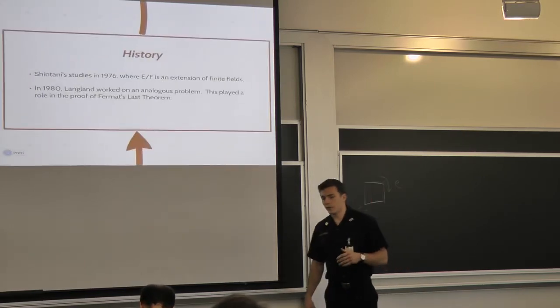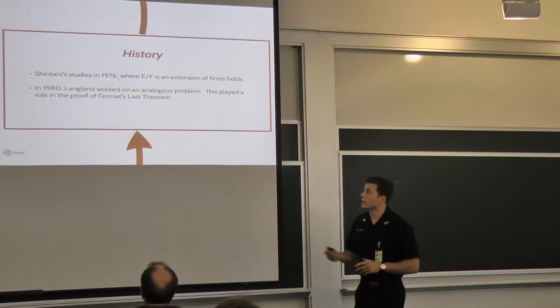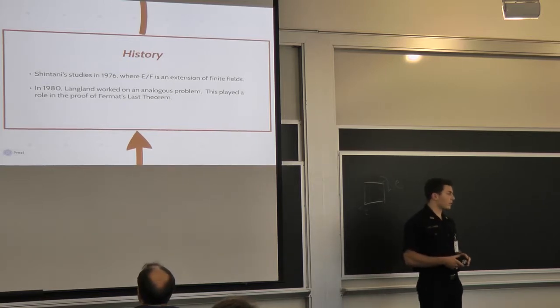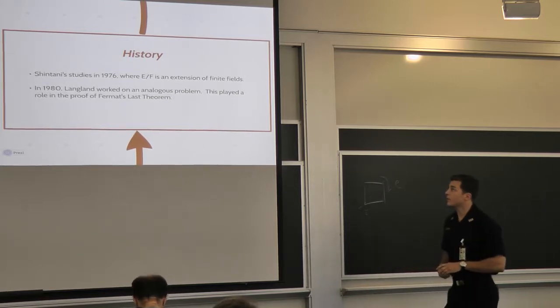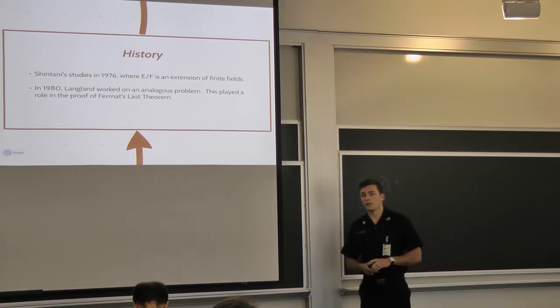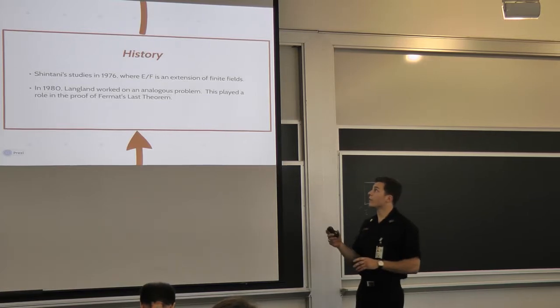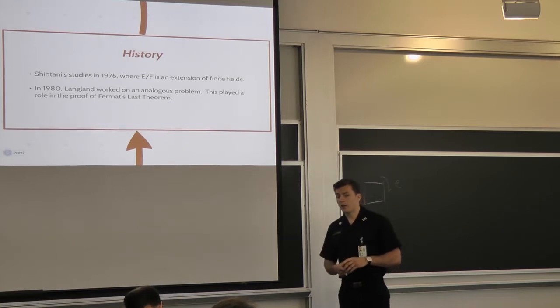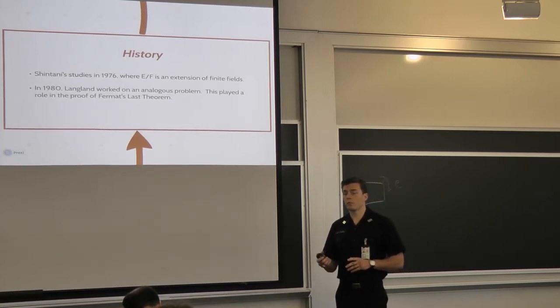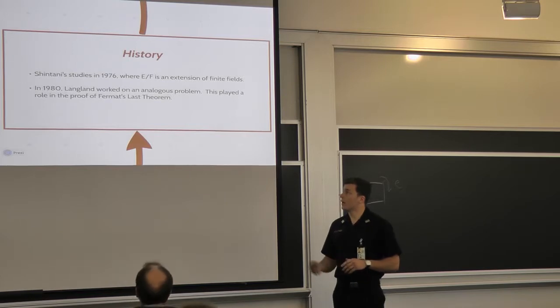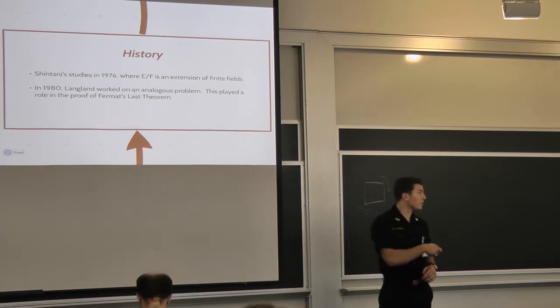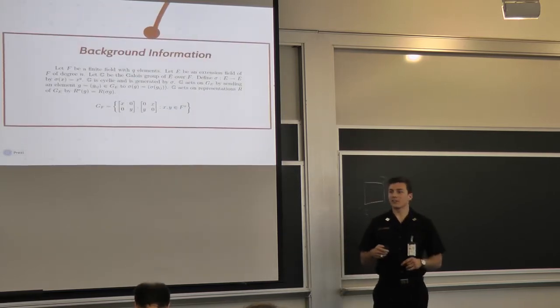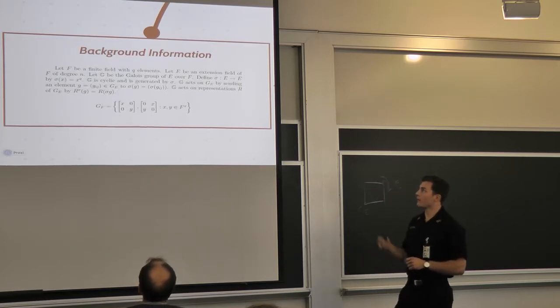So up to this point, everything has been stuff that we have worked on in the fall, and this is actually the stuff we have worked on in the spring. So a little background, the first time this kind of stuff was looked at was with Shintani in 1976. He was looking at GLN of E and GLN of F, where you had to find a field extension E over F. And then Langlands worked on it four years later on an analogous problem with GL2, where the field extension is infinite. And actually played a large role in Fermat's Last Theorem.